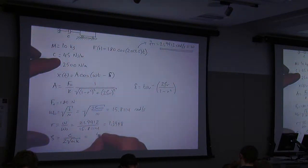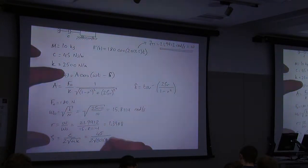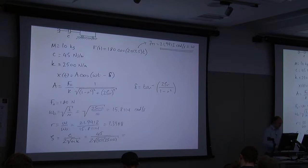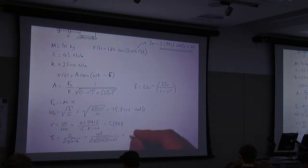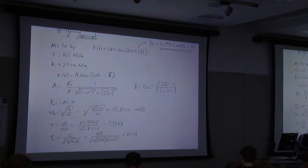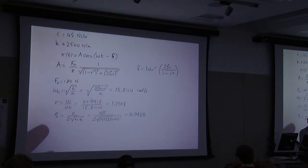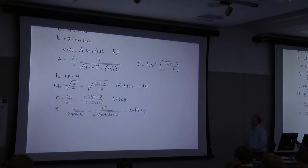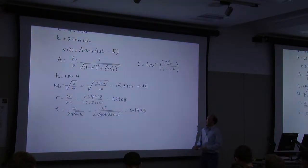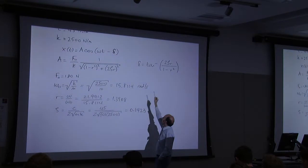So that's 45 divided by 2 times the square root of m, which is 10, and k, which is 2500. Now we've got all the terms to stick into the equation for A and the equation for δ.